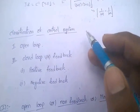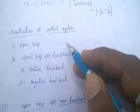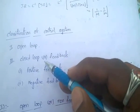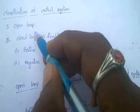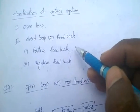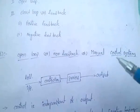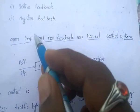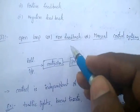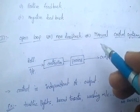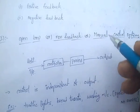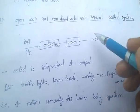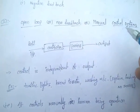Classification of control systems. There are mainly two types: one is open loop, and one is closed loop or feedback control system. Closed loop control systems are further divided into positive feedback and negative feedback control systems. Open loop control systems are also called non-feedback control systems or manual control systems, because the control mechanism is done manually by human beings.